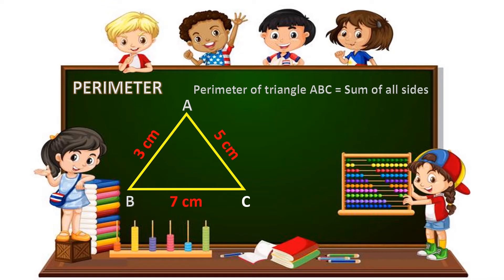To calculate the perimeter of a triangle, add the length of its sides. For example,